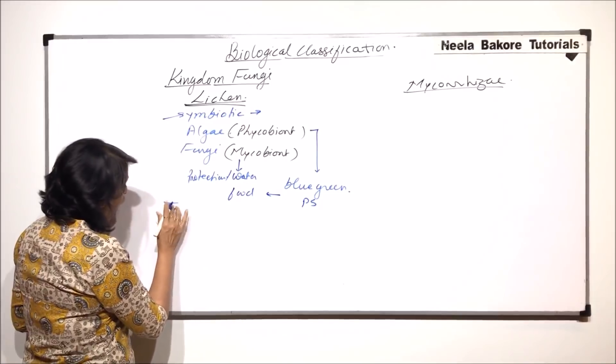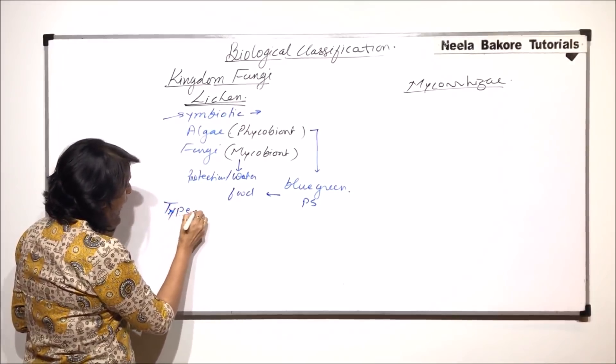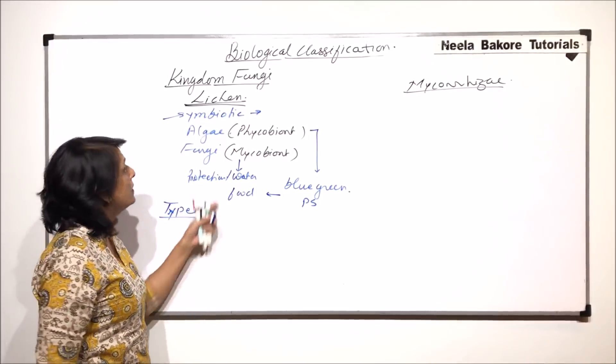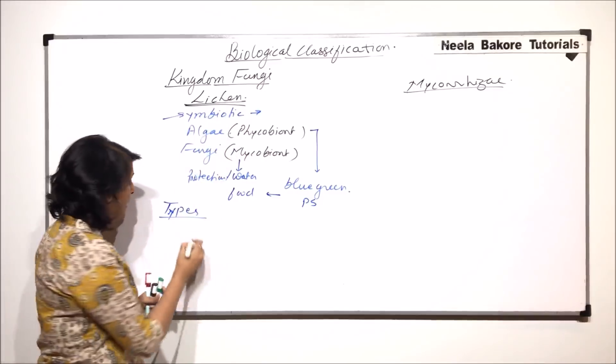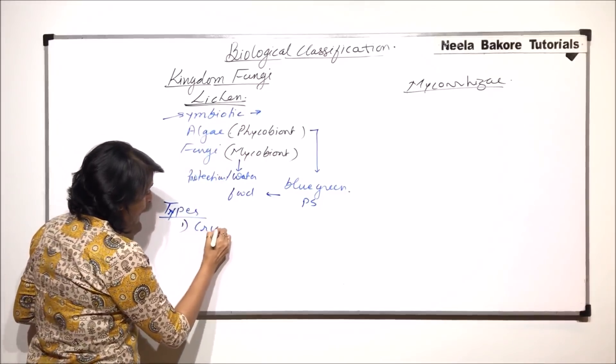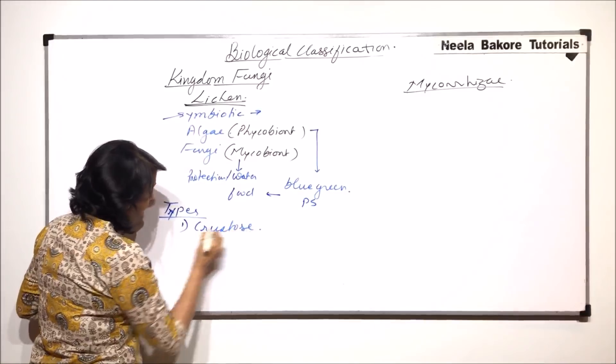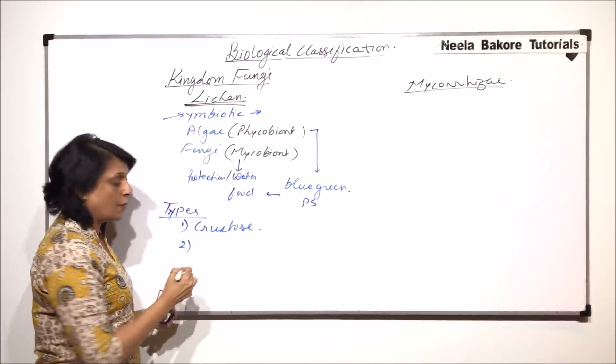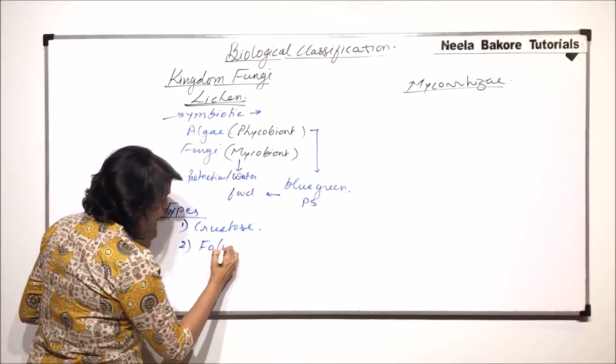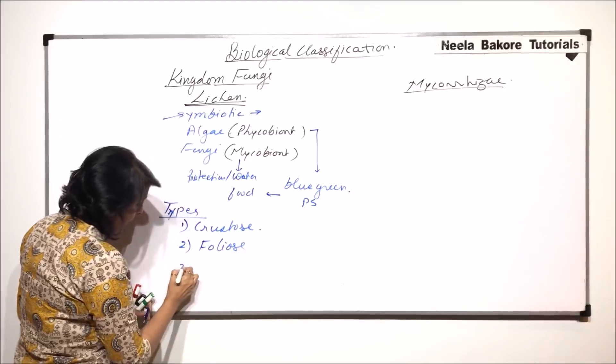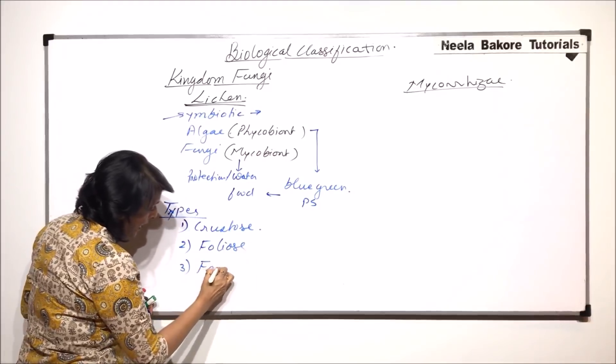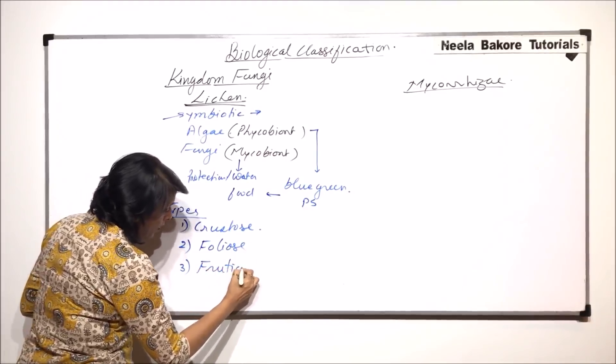When we talk of lichens, we talk of three types. First, they are called crustose lichens. The second ones are known as foliose lichens, and third are known as fruticose lichens.